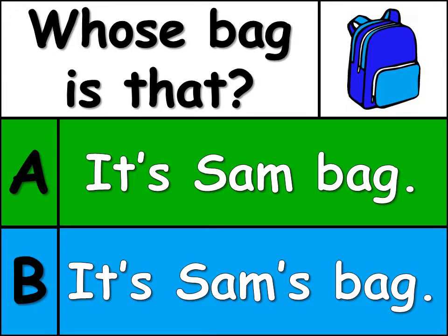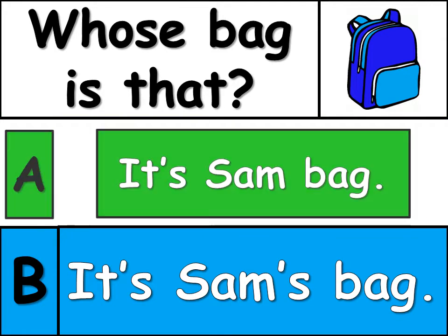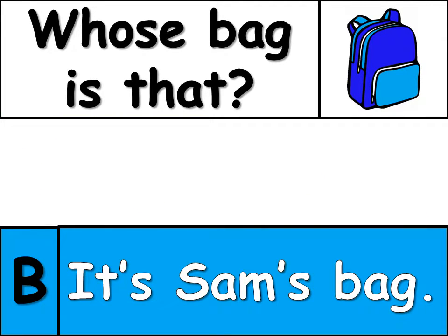Here's question number one. Whose bag is that? Is the right answer A or B? The answer is B. It's Sam's bag. When we're asking the question 'whose,' we need to put an apostrophe S at the end of someone's name.